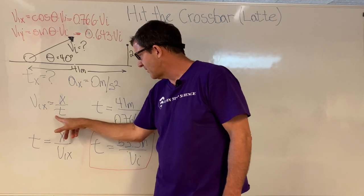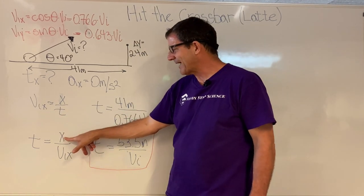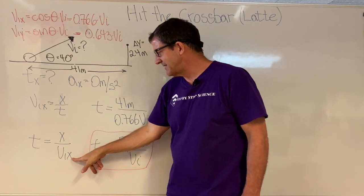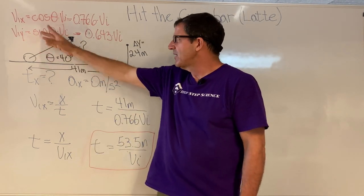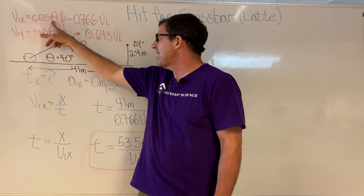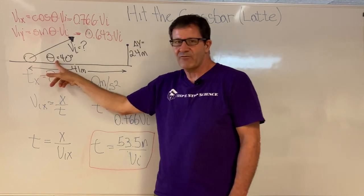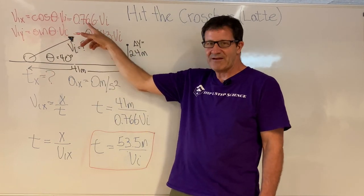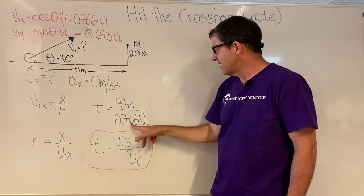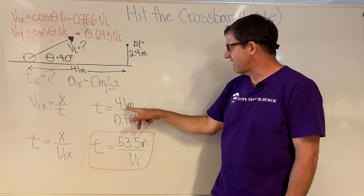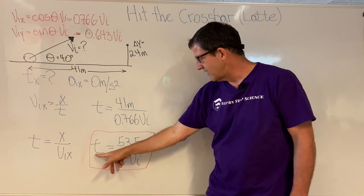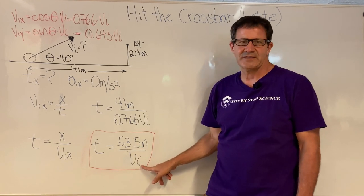We use the simple equation: velocity equals distance divided by time, so time equals distance in the x-direction divided by initial velocity in the x-direction. Plugging in values: x is 41 meters. The initial velocity in the x-direction is the cosine of 40 degrees times the initial velocity, and the cosine of 40 degrees is 0.766. Substituting that in and simplifying — 41 divided by 0.766 — the time equals 53.5 meters divided by the initial velocity.